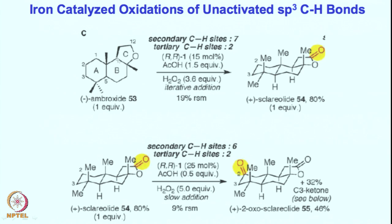Upon formation of this cyclic ester product we can take this major product as a substrate once again — this is the same substrate. Now it is a completely different scenario. It was activating at the alpha position before; therefore alpha ketone formation is feasible. This is a secondary center, which is why hydroxylation leads to the ketone product.